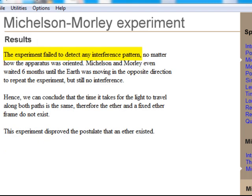The experiment failed to detect any difference in time along the two paths. They even waited for six months and repeated the experiment with the same results. This failure of their experiment allowed us to conclude that the ether frame does not exist.